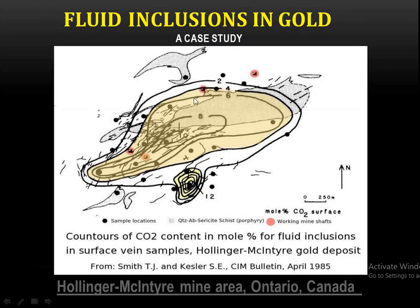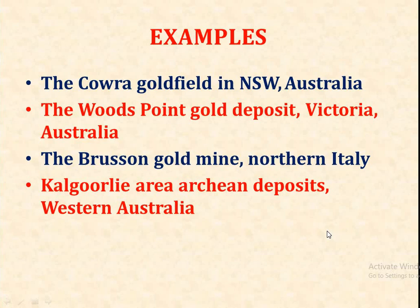Fluid inclusions in gold deposits: a case study from the Hollinger-McIntyre gold deposit shows contours of CO₂ content in mole percentage of fluid inclusions in surface vein samples. This is from the Hollinger-McIntyre mine area in Ontario, Canada. Other important examples include the Cobra gold field in northwest Australia, the Woods Point gold deposit in Victoria, Australia, and the Bruce gold mine in northern Italy.